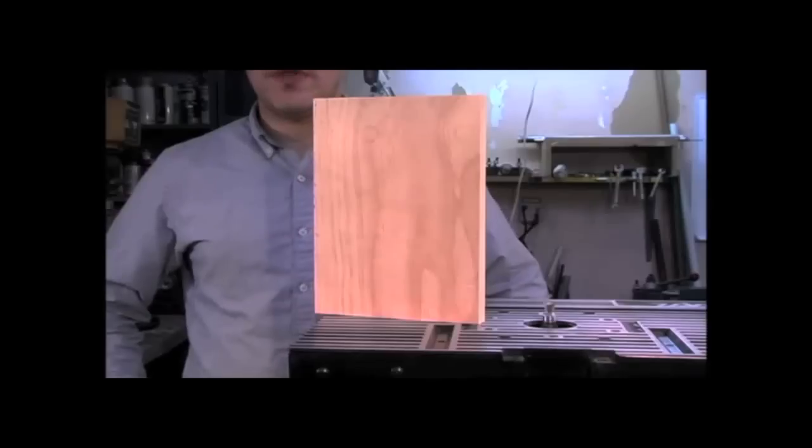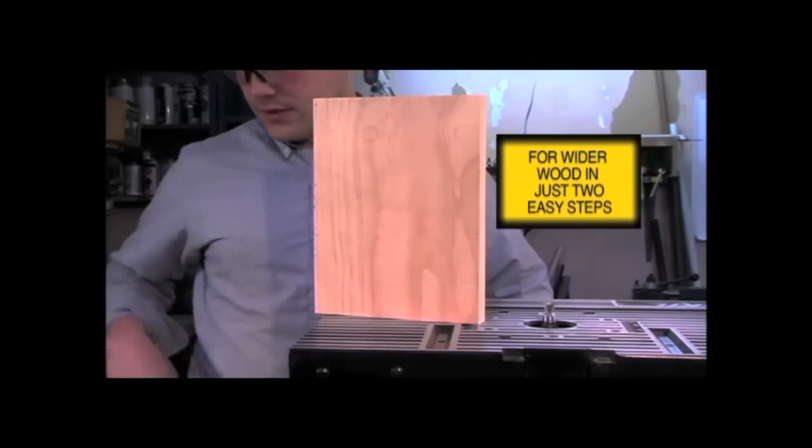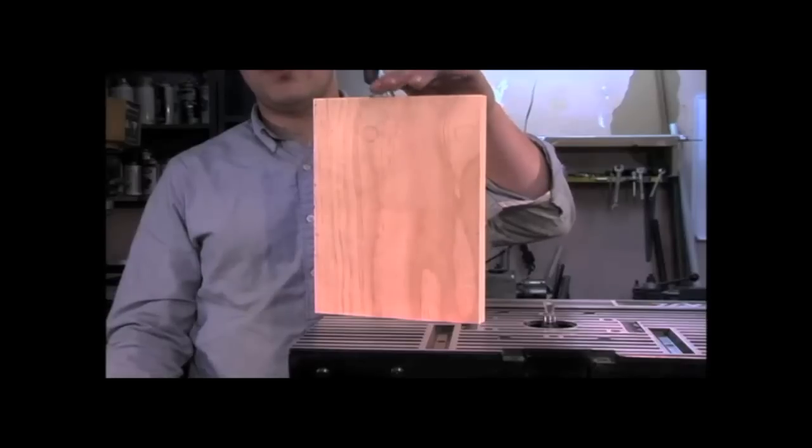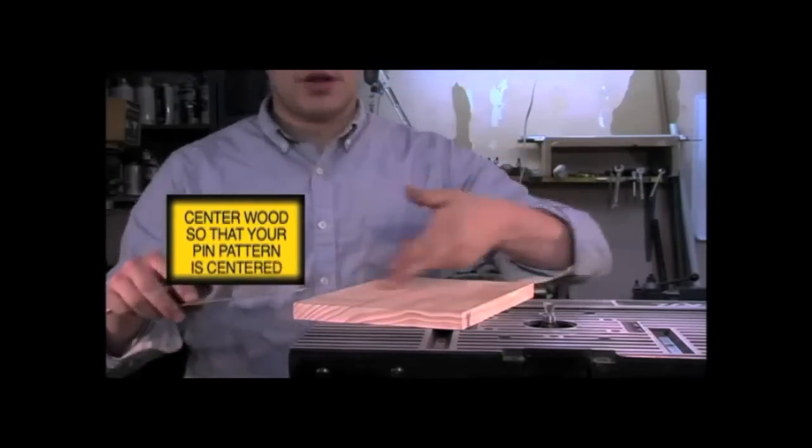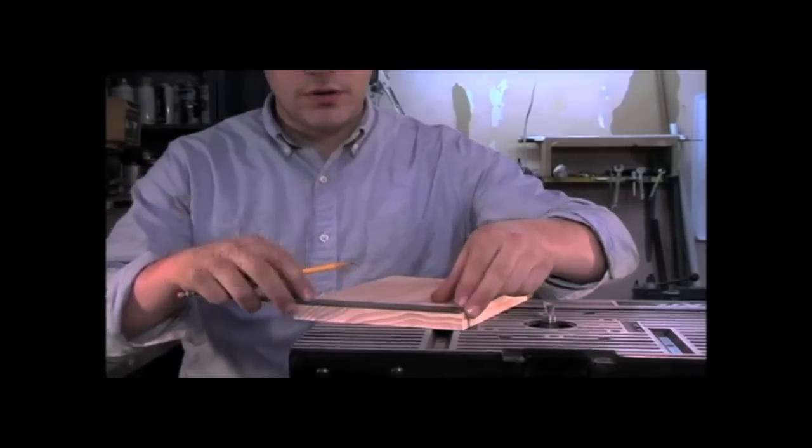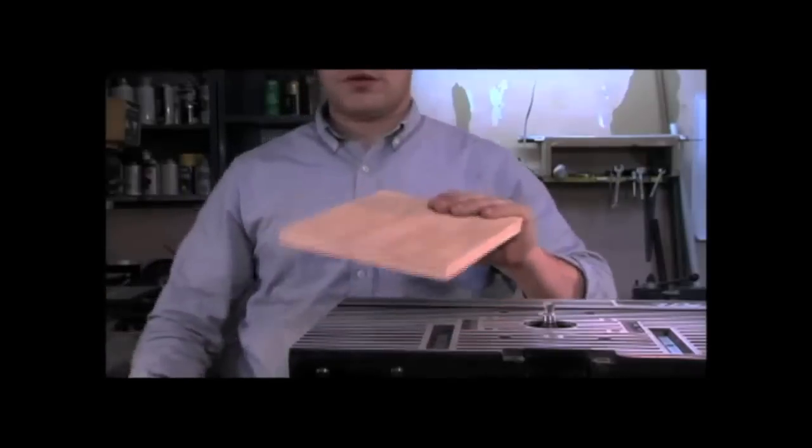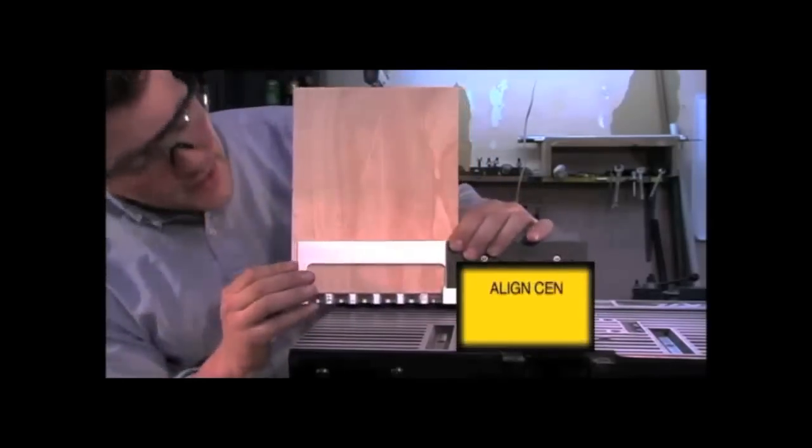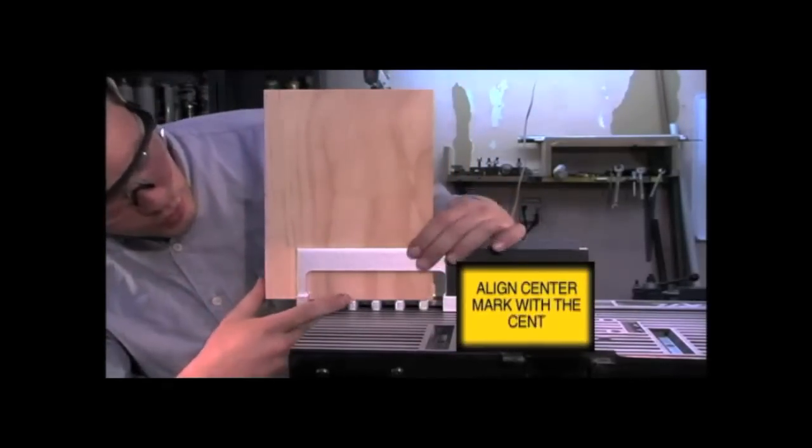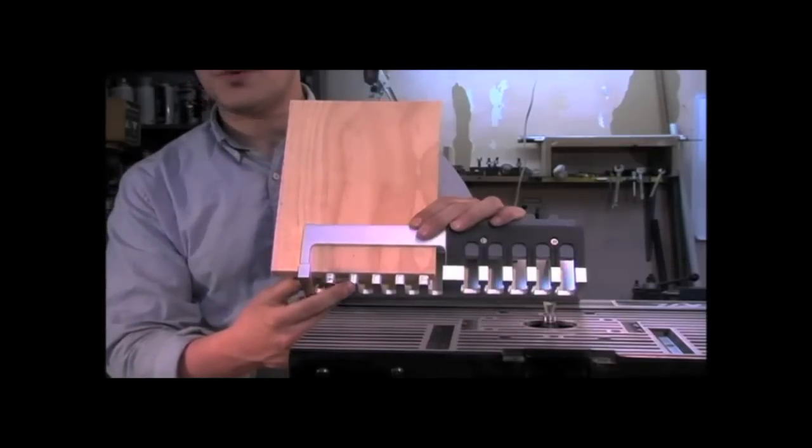So if we're cutting a piece of wood that's wider than the jig, we'll have to make the cuts in two steps. To align the wood, we'll first need to mark center so we can ensure that our pattern will be centered on the board. We'll now align the center mark with one of the pattern fingers, which will ensure that there's a tail centered on the board.